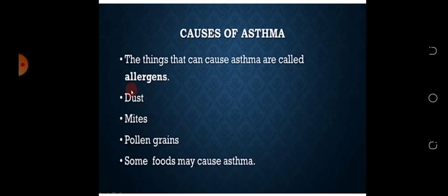Pollen grains سے بھی کچھ لوگوں کو allergy ہوتی ہے۔ Pollen grains flowers کے center میں موجود ہوتے ہیں - پھول کے اندر چھوٹے چھوٹے دانے نما جو نظر آتے ہیں وہ pollen grains ہوتے ہیں۔ اس کے علاوہ some foods may cause asthma - کچھ کھانوں کی وجہ سے بھی allergy ہوتی ہے، ان کی smell یا aroma سے بھی asthmatic patient کو سانس لینے میں problem اور کھانسی ہو سکتی ہے۔